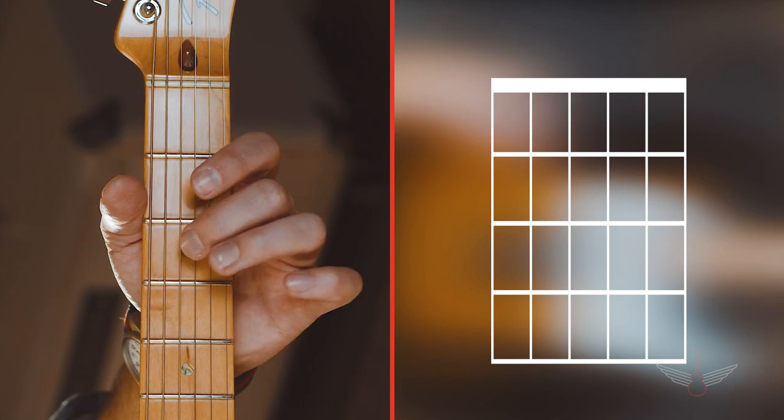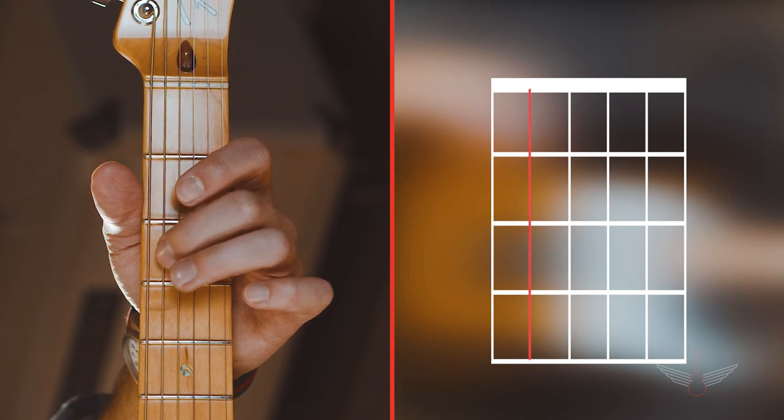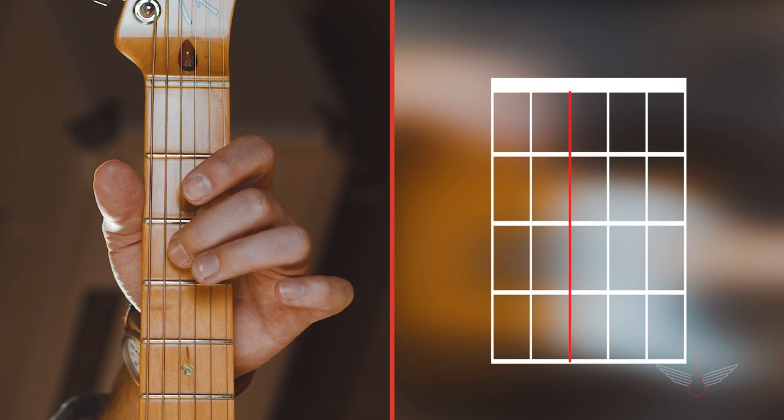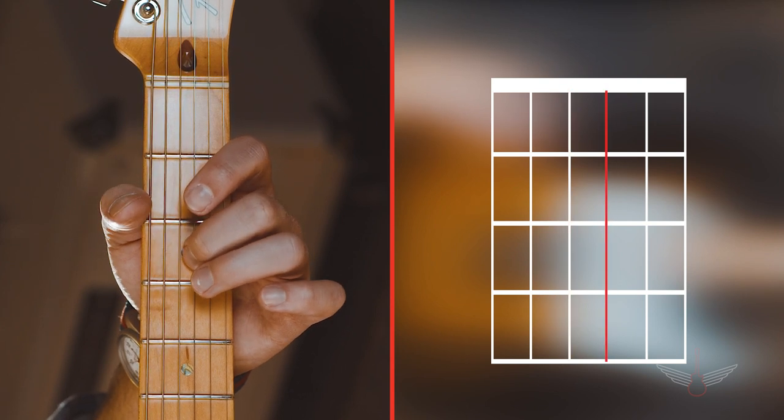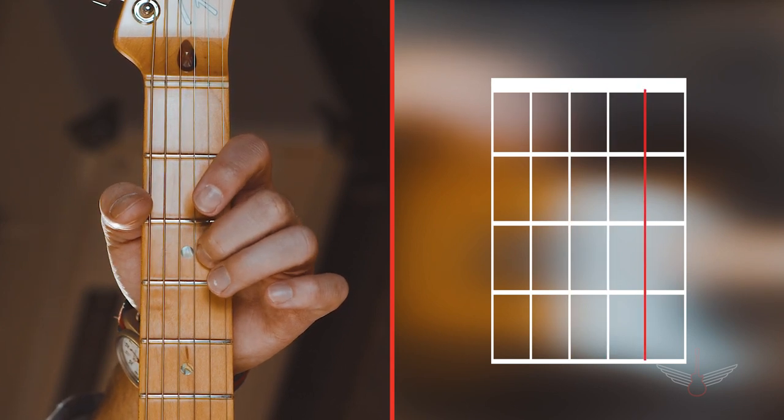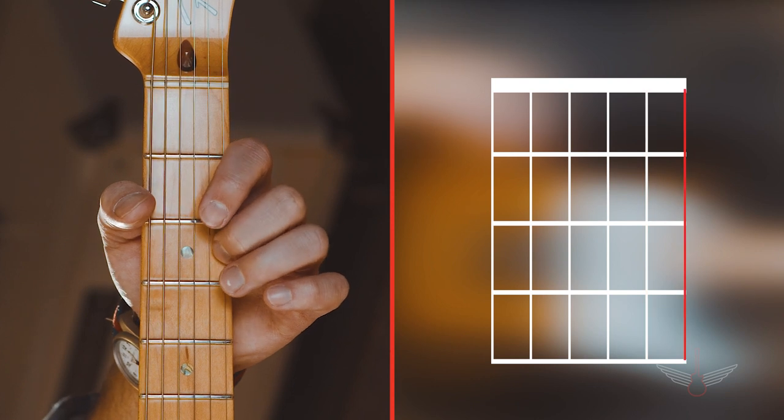Low E, or sixth string. A, or fifth string. D, or fourth string. G, or third string. B, or second string. And high E, or first string.